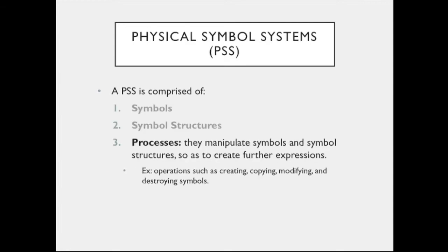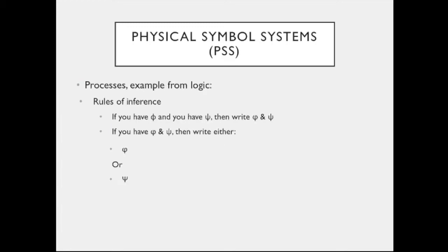Finally, we have processes which manipulate symbols and symbol structures so as to create further expressions. These include operations such as creating, copying, modifying, and destroying symbols. An example would be the rules of inference of propositional logic that allow you to derive propositions. For instance, the conjunction rule says that if you have phi and if you have psi, then you can write phi ampersand psi. These are just formal symbols — I'm giving examples to provide some context.